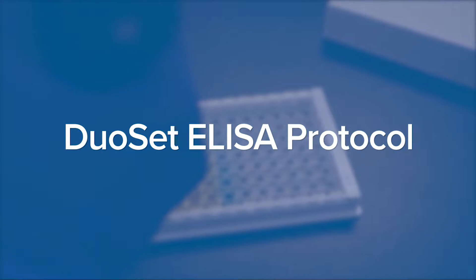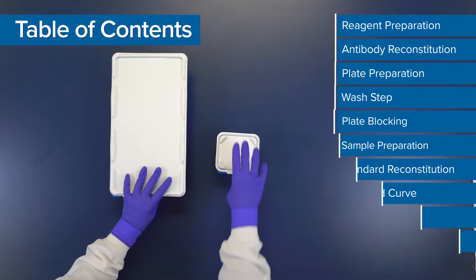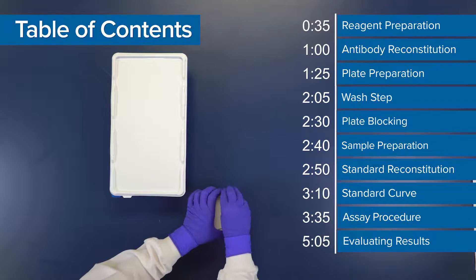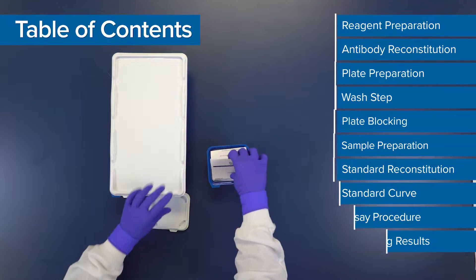This video is a general step-by-step guide to running an R&D Systems Duoset ELISA. This is a development assay which provides the components for performing sandwich ELISAs and has been validated for cell culture supernate samples.